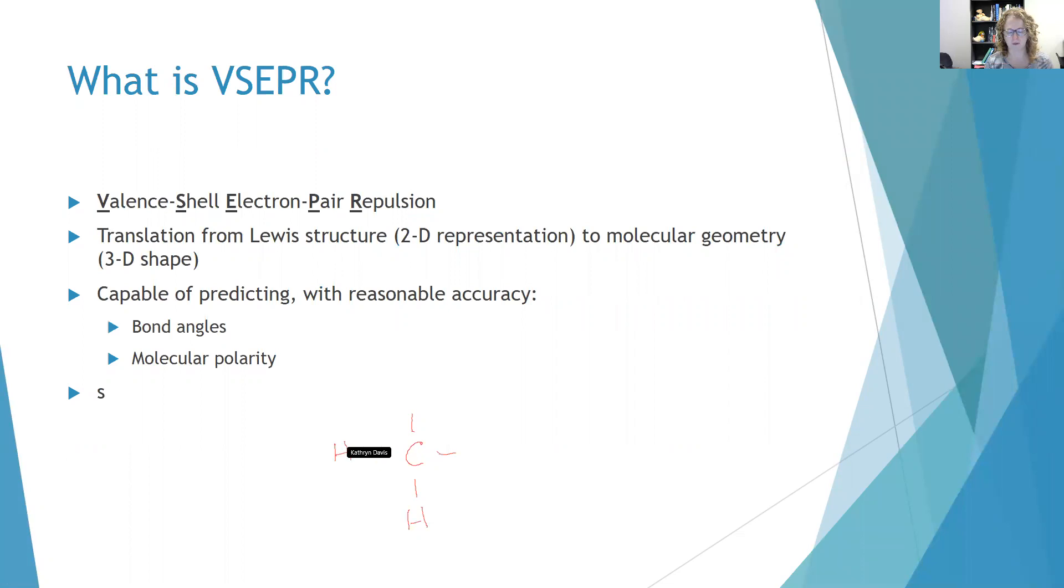Remember, this Lewis structure of methane would be four single bonds. But the real molecule has the carbon in the middle and hydrogen at the top and another hydrogen sticking out. And then there's a hydrogen that is going backwards into the plane of the computer and a hydrogen sticking out at you. It's what's called tetrahedral. And the reason I've made that prediction is because of VSEPR theory. It goes from this 2D Lewis structure to this 3D molecular shape.